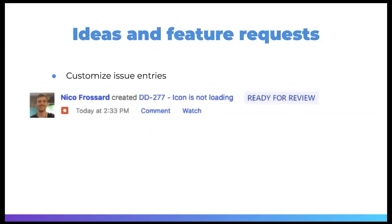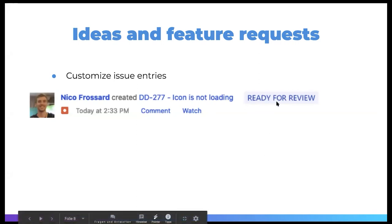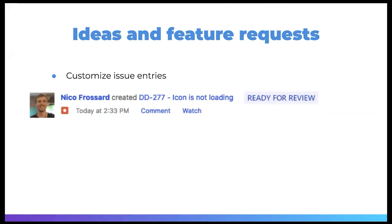I'll finish by showing some feature requests from users — it's always interesting to see what's lacking and what we can still improve. One request is to customize the issue entry to show additional fields like issue status directly in the activity stream — we thought about making it generic so any field can be shown. We also got a request for new ways of filtering issues, like only showing issues where a user was mentioned. Unfortunately, that's hard to do with the JIRA API right now, but it's always interesting to know what can be added to our filtering options.